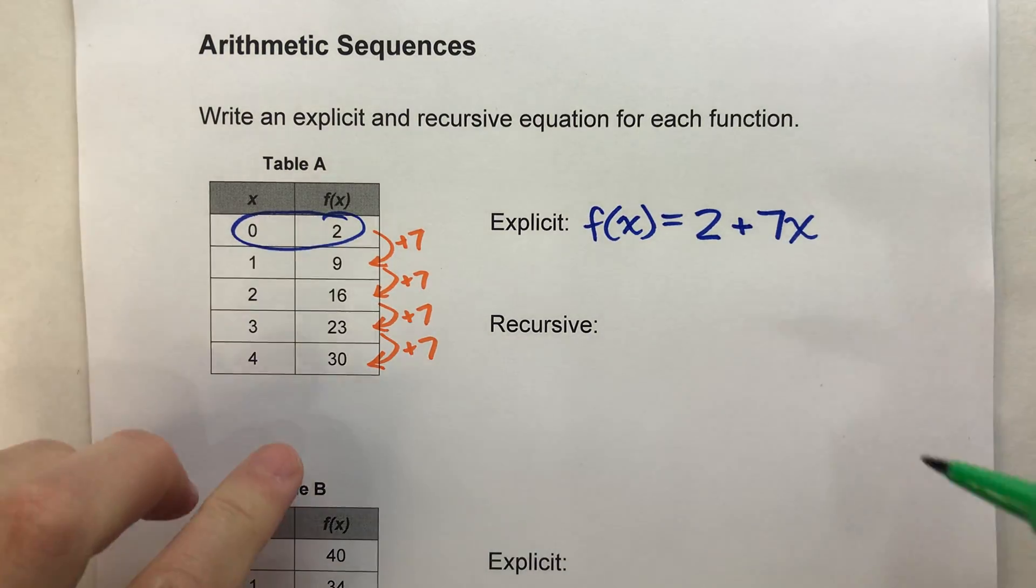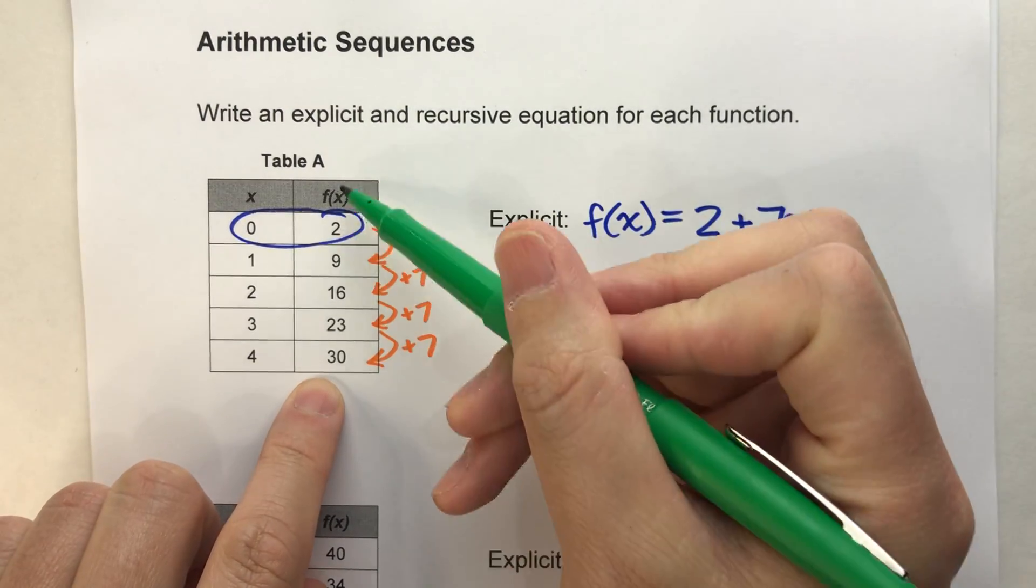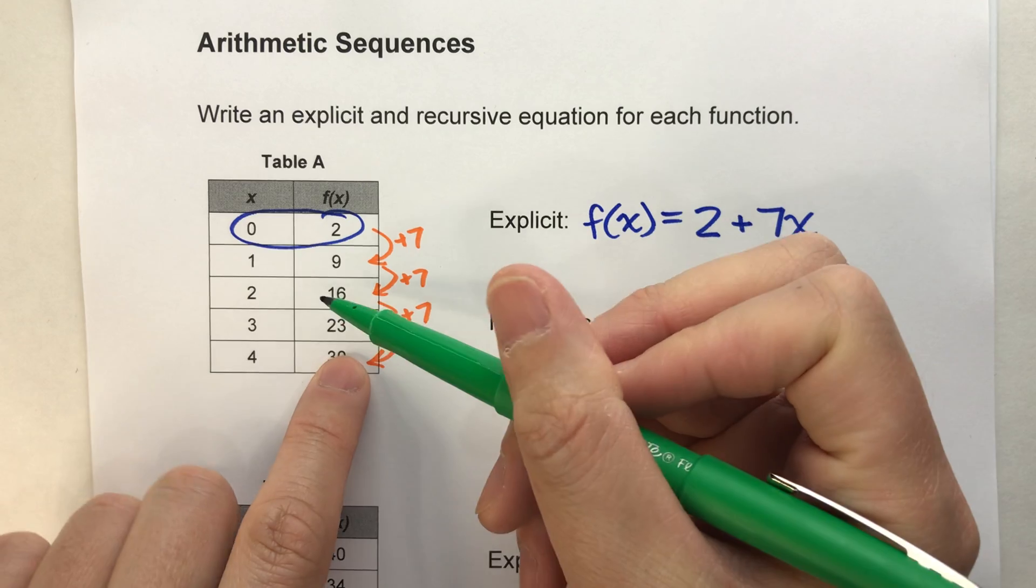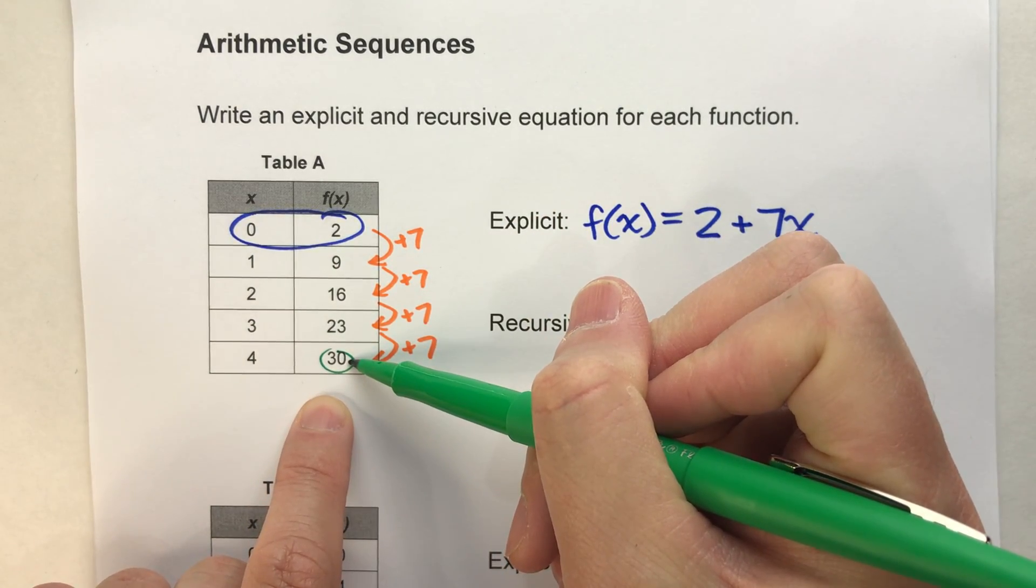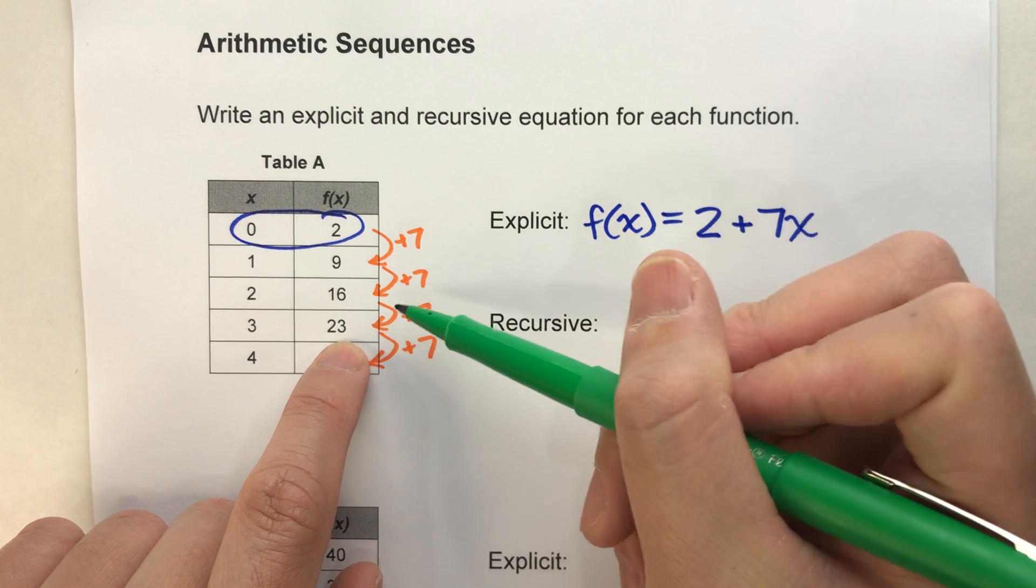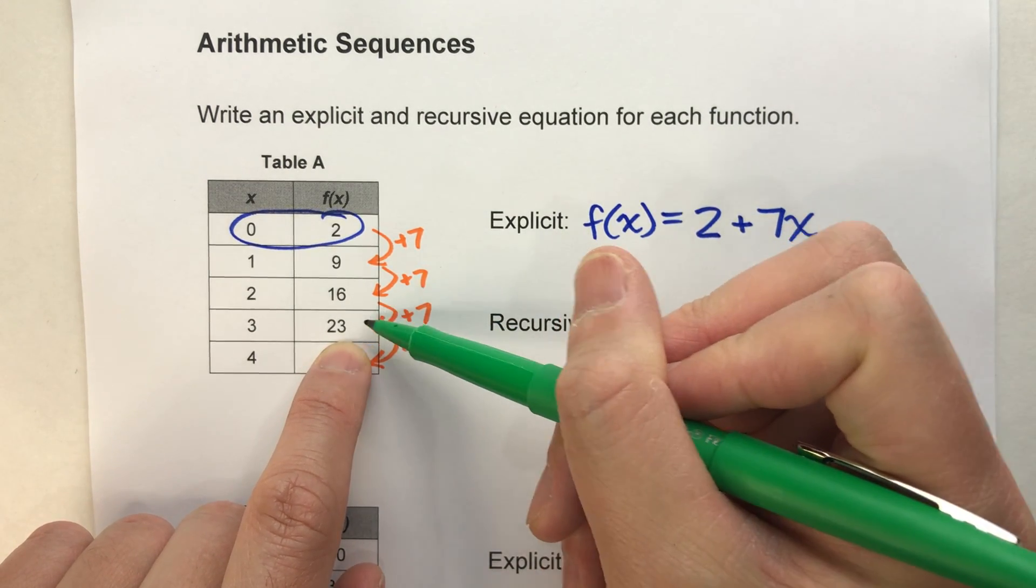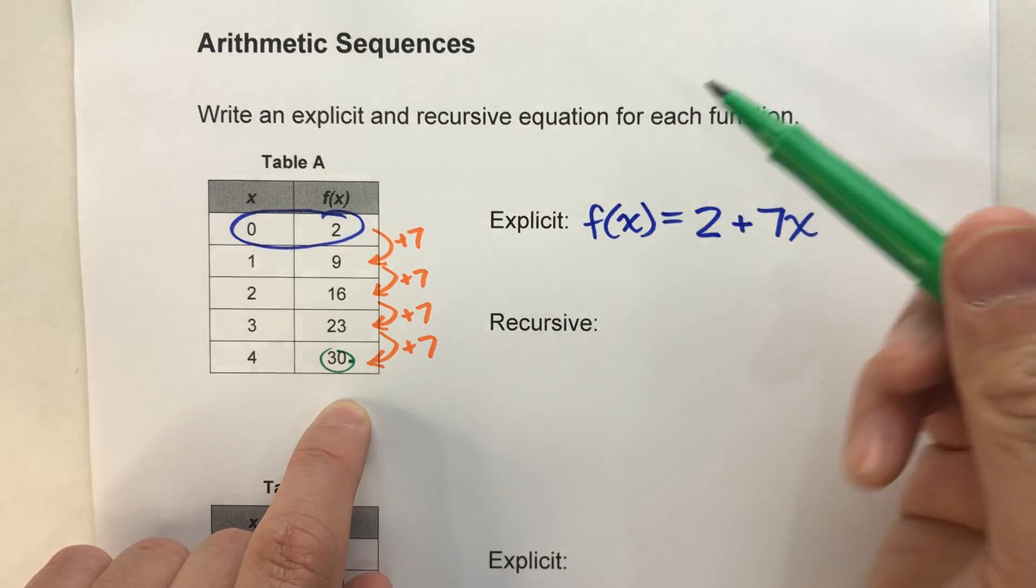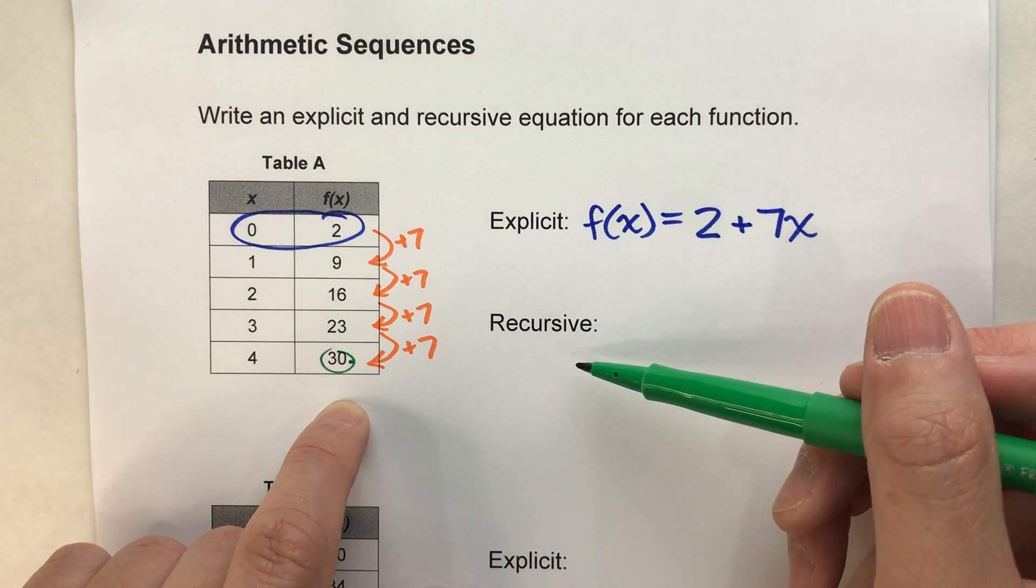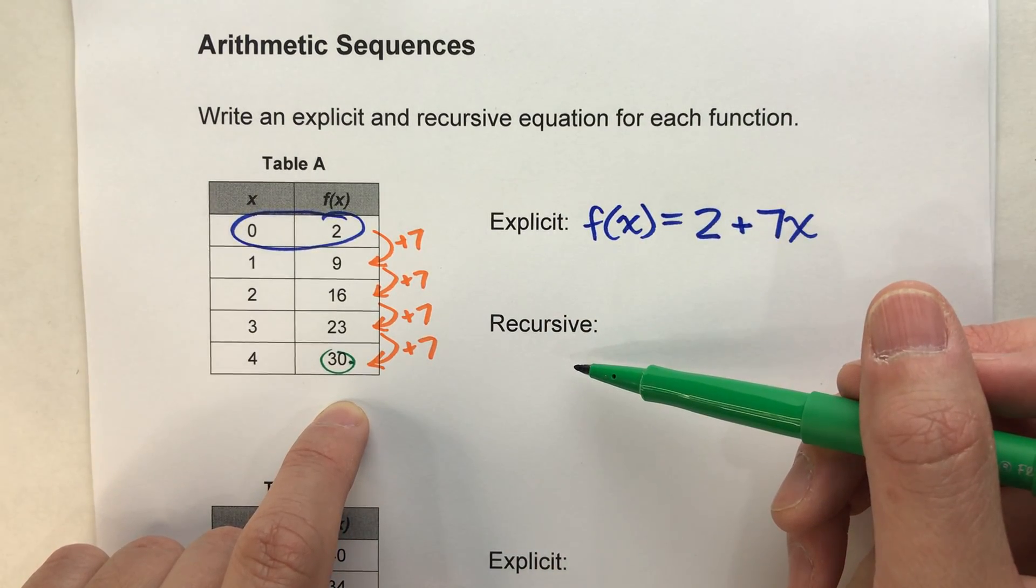For example, in this sequence, let's say I wanted to know what f of 4 was. Let's say I didn't know this value here. All I would need to do is take the previous value, which is 23, and add 7 to it, and I'd know I'd get f of 4. So a recursive equation is based on knowing the previous number.